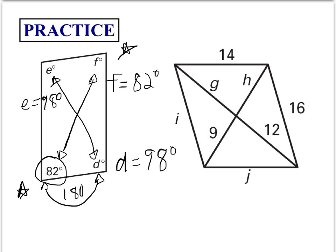So in this one, we have to find I, G, H, and J. Well, J is straightforward. This is a parallelogram. We know that that needs to be 14. If this is a parallelogram, we know I needs to be 16. And we know that these are being bisected. So G would be 12, and H would be 9.